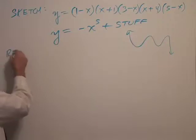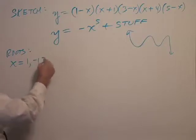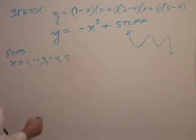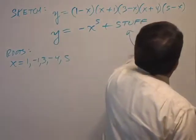And it has five roots. Again, roots are x equals 1, negative 1, 3, negative 4, and 5. So 1, negative 1, 3, negative 4, 5.